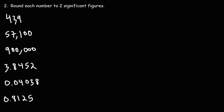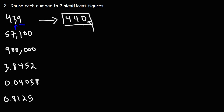Now let's work on some more examples. Round each number to two significant figures. Starting with 439 — the second significant digit is 3, and to the right is a 9, so we round the 3 up. From 439, we round it to 440. Without a decimal point, this zero is not significant, so we have two sig figs.